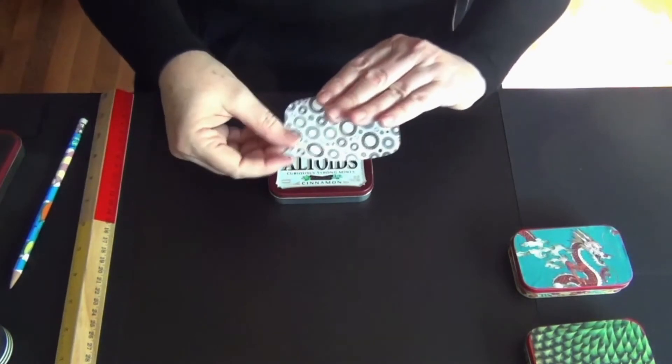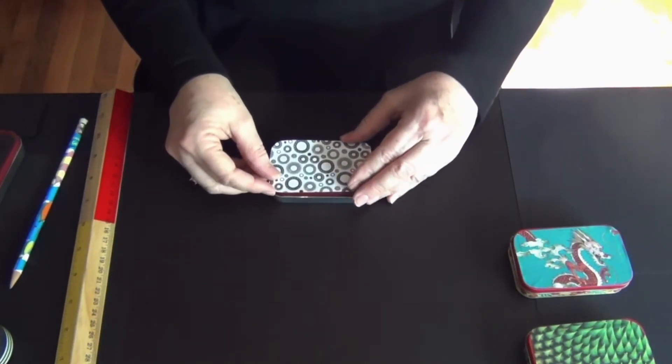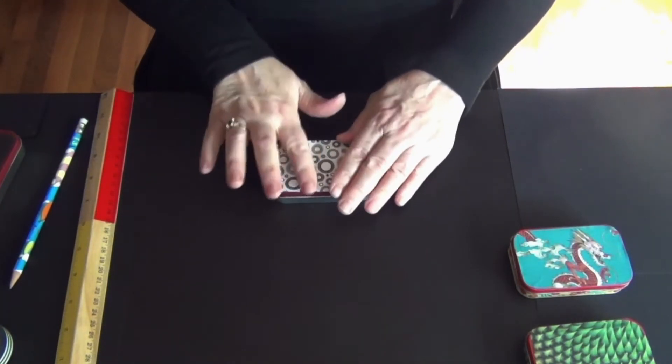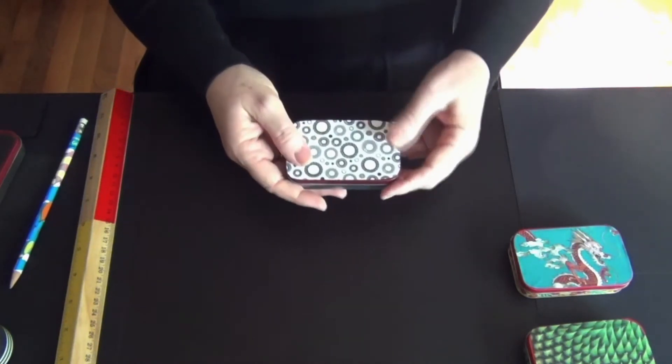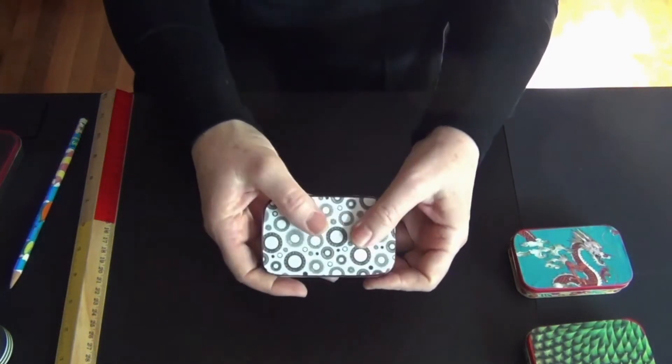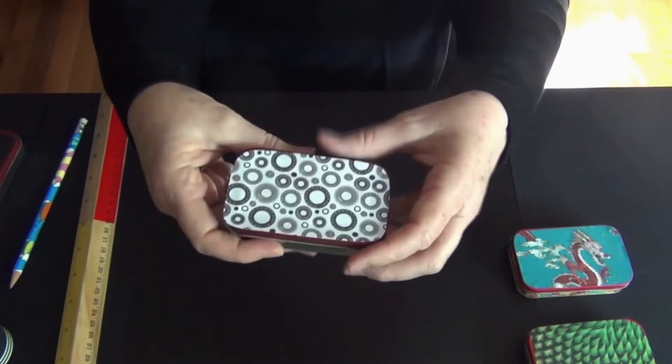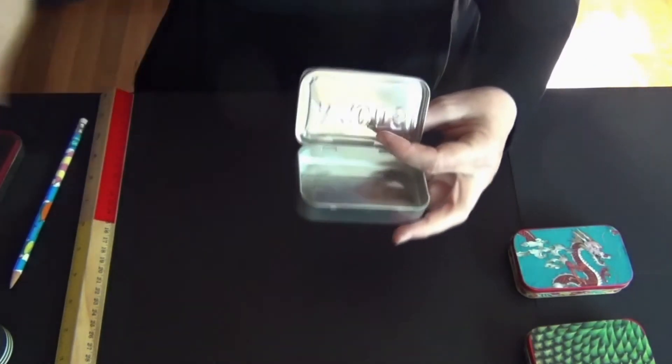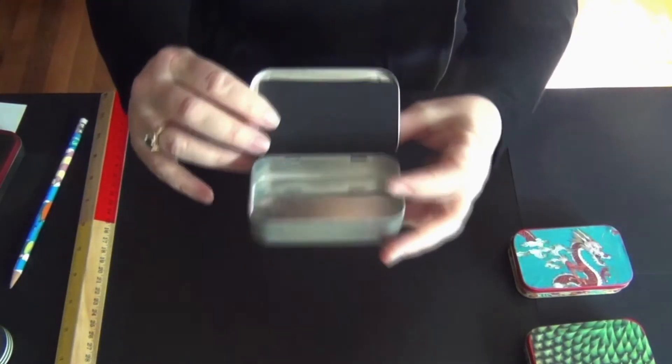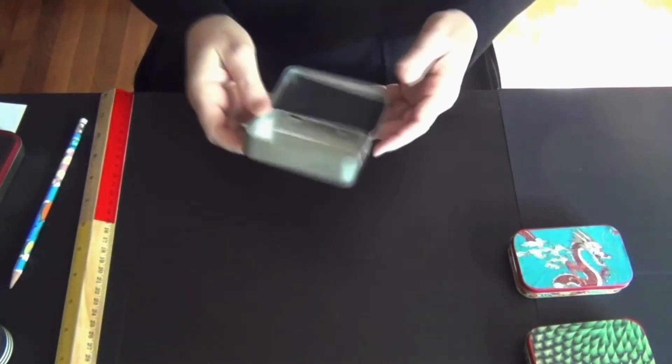Now you can either do your story first or you can decorate your tin first, whichever you like. This I lost our lid. There's our lid piece in there. This is the one. Yeah, that one's trimmed.